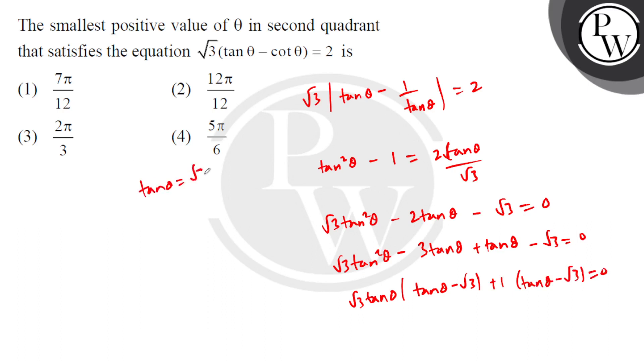So tan theta has 2 values: root 3 and minus 1 by root 3. Now root 3 is not feasible because in the second quadrant, tan theta is negative. So minus 1 by root 3 is acceptable.